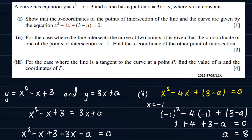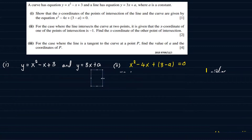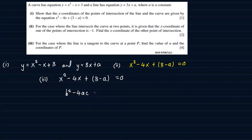Let's go on to part 3. For the case where the line is a tangent to the curve at a point P, find the value of A and the coordinates of P. We already have x squared minus 4x plus 3 minus A equal to 0 as the combined equation for the curve and the line. If it is a tangent, then B squared minus 4ac should be equal to 0.